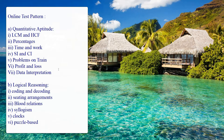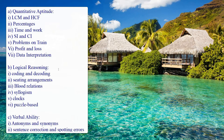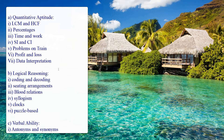For the first round aptitude test, there are three different sections. The first section is quantitative aptitude. Topics include LCM and HCF, percentages, problems on trains, profit and loss, simple interest, compound interest, time and work, and problems related to data interpretation.